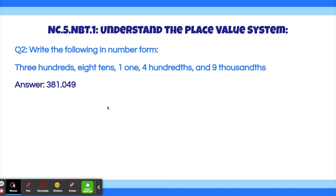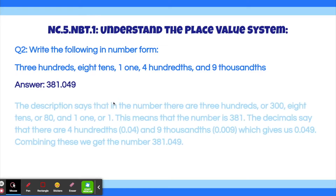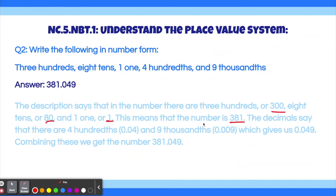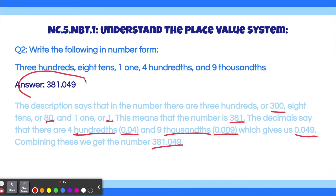If you got this correct, feel free to skip to the next question. The description says there are three-hundredths, which means 300; eight-tens, which is 80; and one-one, which is just 1. This means the whole part of this number is 381. The decimals say there are four-hundredths, which means 0.04, and nine-thousandths, which means 0.009, giving us 0.049. Adding these together, we get 381 plus 0.049, which is 381.049, our answer.